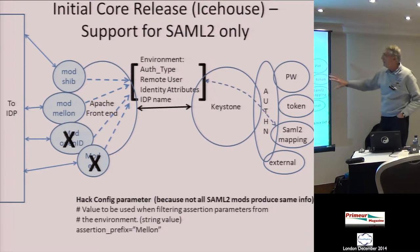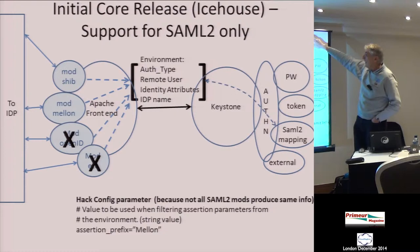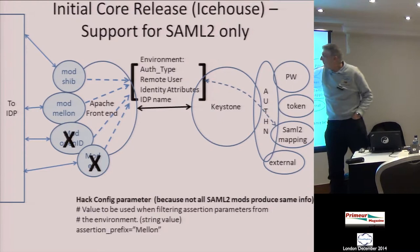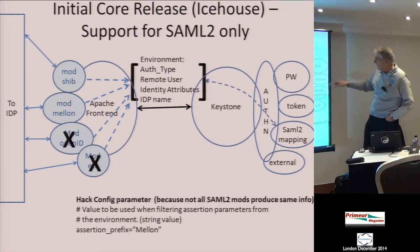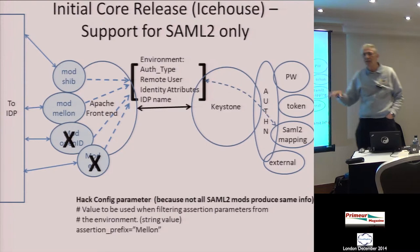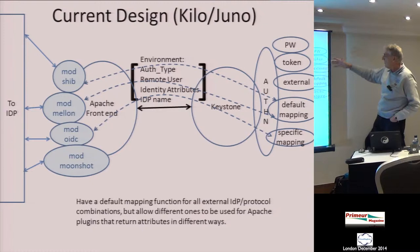The first release, Ice House in April of this year, supported Shibboleth or mod_mellon SAML 2 only. The plugins set all the attributes as environmental parameters passed to Keystone, then there was SAML-specific mapping — hard-coded that this was going to be SAML. There was also a hack: if you used mod_mellon, parameters came over slightly differently than mod_shib, so they had a hack to remove the mellon string — not an ideal solution, but it was starting to get into the core release.